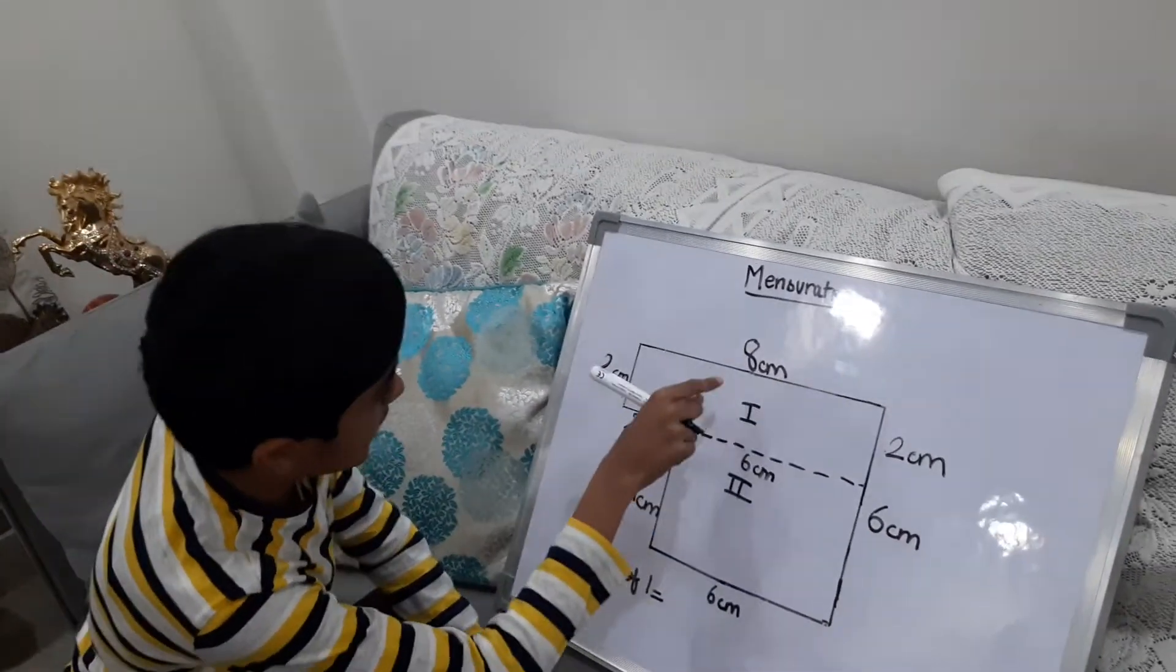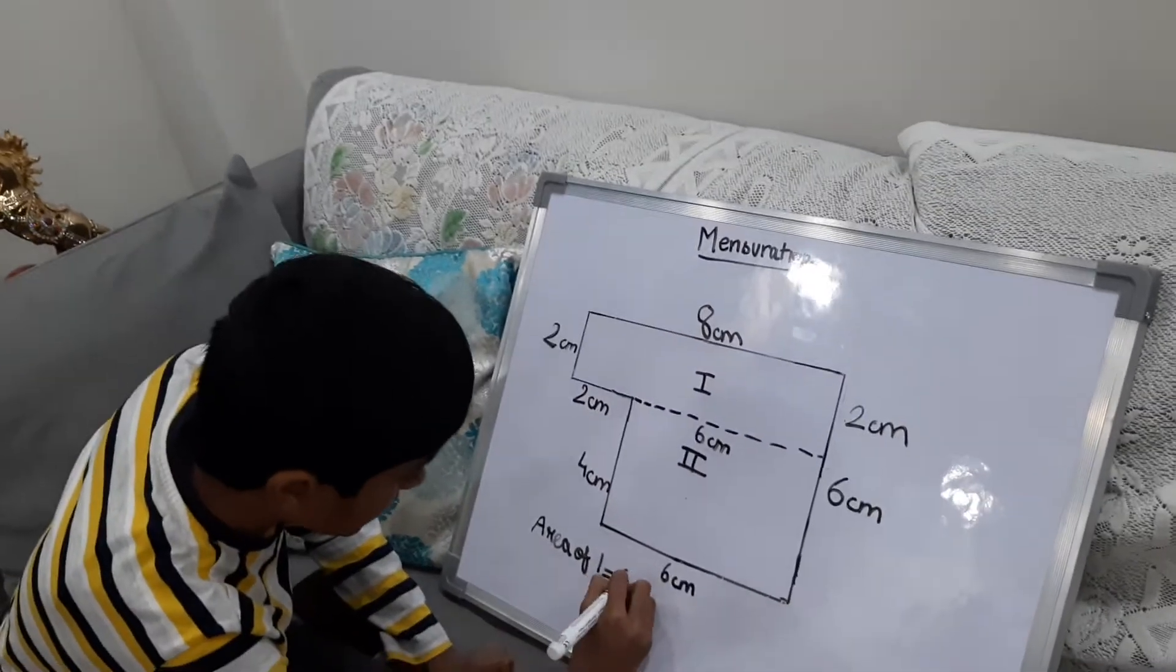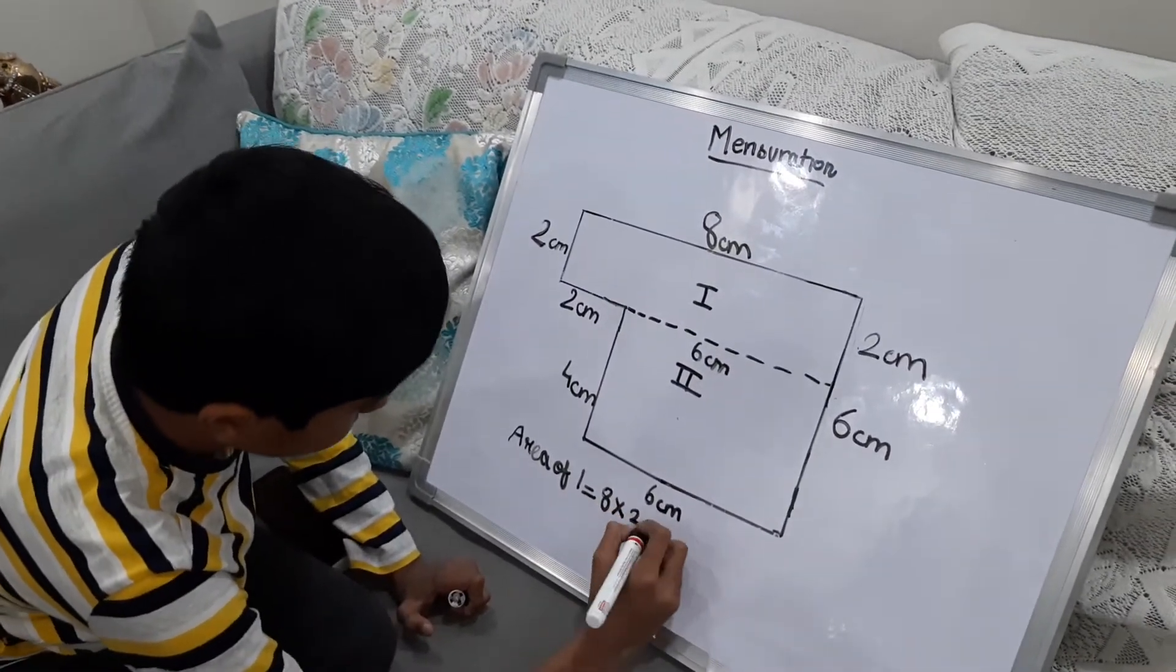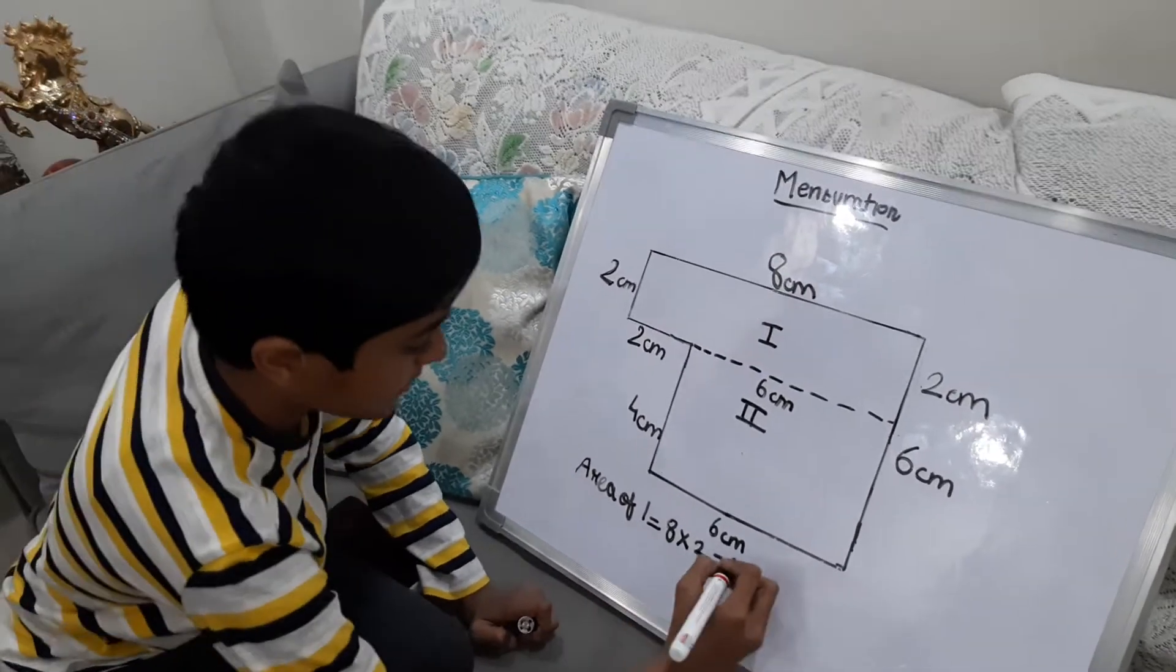We will do the length is 8 cm and the breadth is 2 cm. So we will do 8 into 2 is equal to 16 cm square.